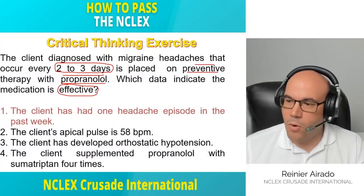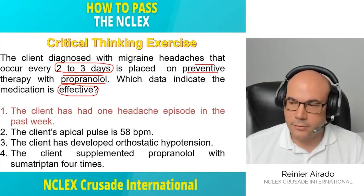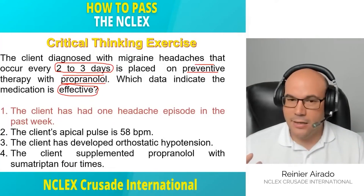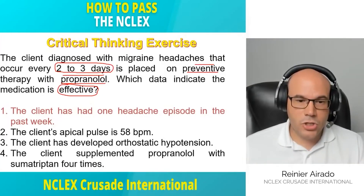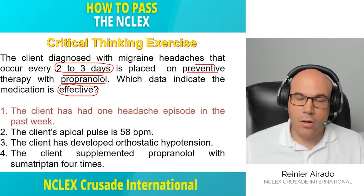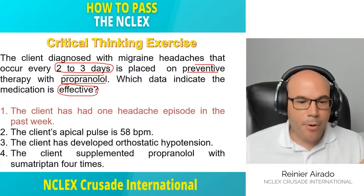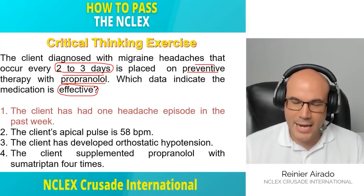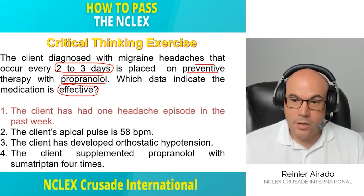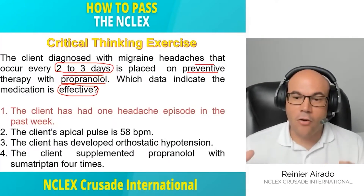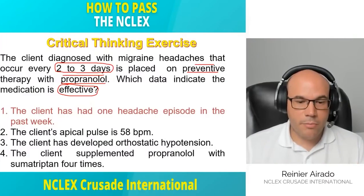Looking at answer number two, the apical pulse is 58. We have bradycardia here because the normal range is 60 to 100, and 58 is below that. Why the bradycardia? Propranolol — also known as Inderal — is a beta blocker. A beta blocker slows atrioventricular conduction and decreases the heart rate, so it can cause bradycardia.